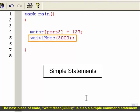The next piece of code, wait1msec3000, is also a simple command statement. It directs the robot to wait for 3000 milliseconds.